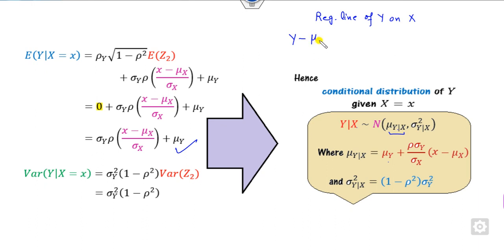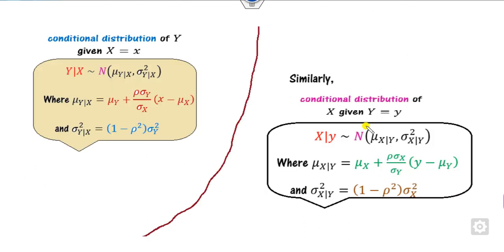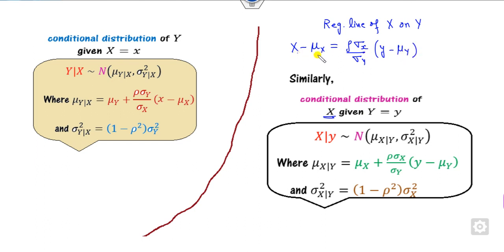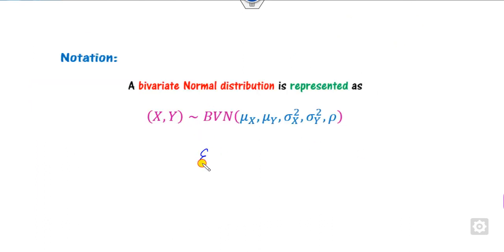So the conditional distribution of y given x is normal with mean equal to the regression line of y on x, and variance σy²(1 − ρ²). Similarly, the conditional distribution of x given y is normal with mean given by the regression line of x on y, and variance σx²(1 − ρ²). We will now describe various examples.